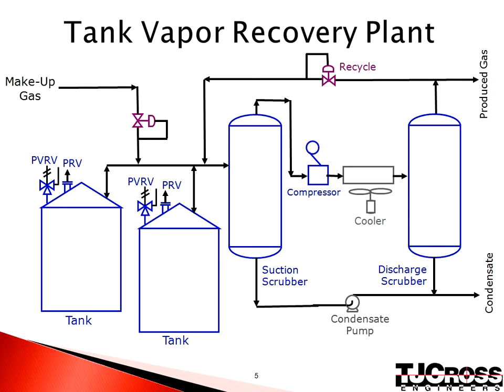Next, we will discuss tank vapor recovery gas. This system is designed to address the gas that evolves from hydrocarbon fluids at atmospheric conditions. Each tank must be blanketed with makeup gas or an inert gas, such as nitrogen, to prevent the introduction of air during tank in-breathing. Gas is introduced into the tanks at pre-set vacuum conditions to protect the tank against collapse. Produced gas from all the tanks are gathered together and then compressed and cooled for further treatment.